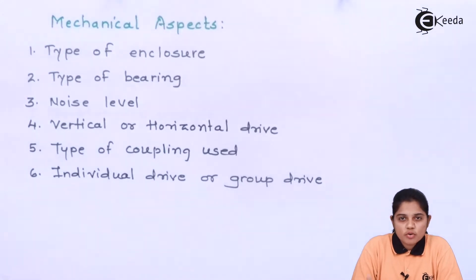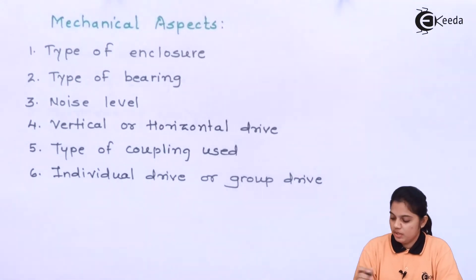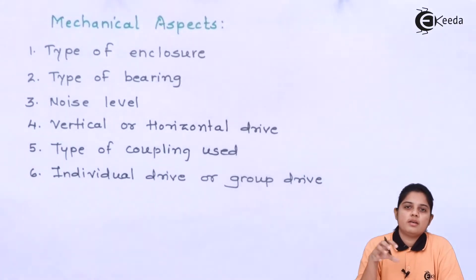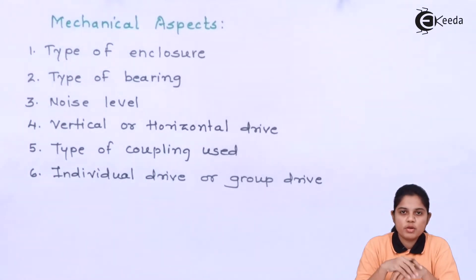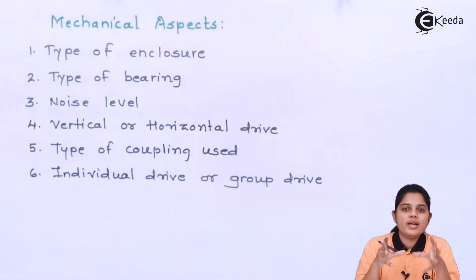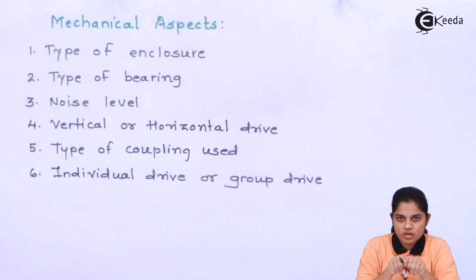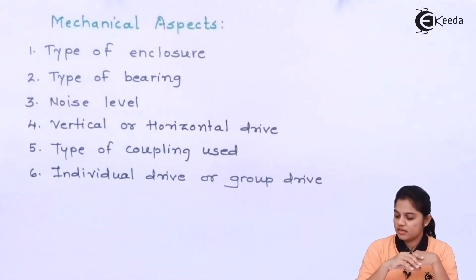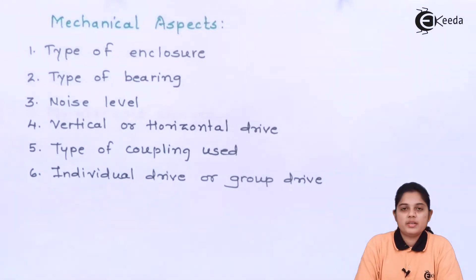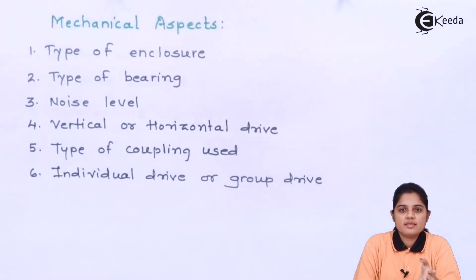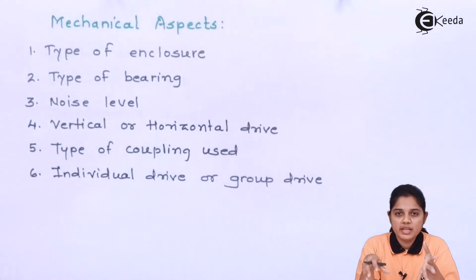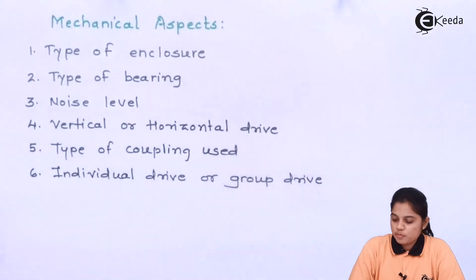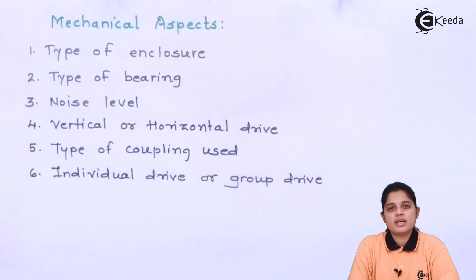Another mechanical aspect is vertical or horizontal drive — some motors only work when placed vertically. Then there is the type of coupling used. Coupling connects the load to the motor, and coupling losses should be minimized, because improper coupling causes loss of signal and power. Finally, individual drive means a single motor drives a single load, while group drive means a single motor drives multiple loads. These mechanical aspects must all be considered when determining the mechanical characteristics of the motor.